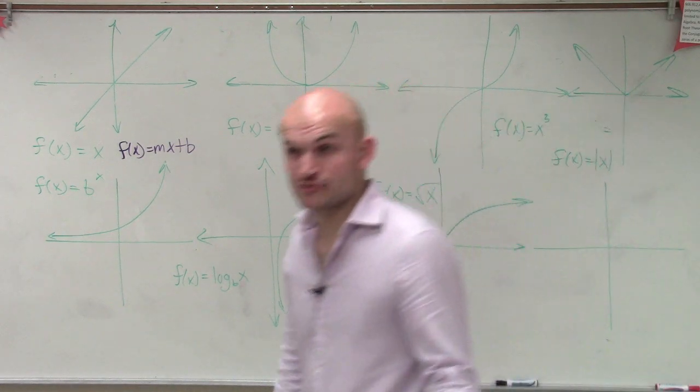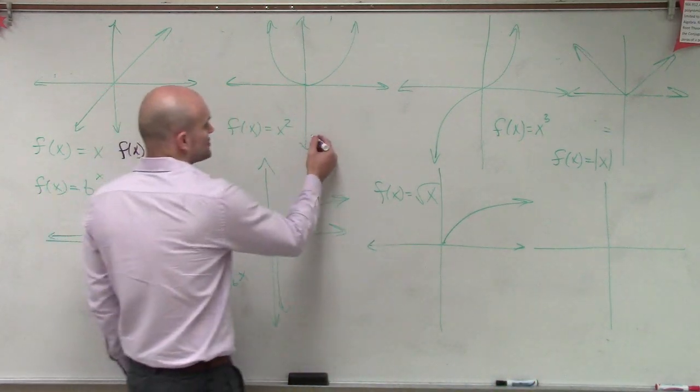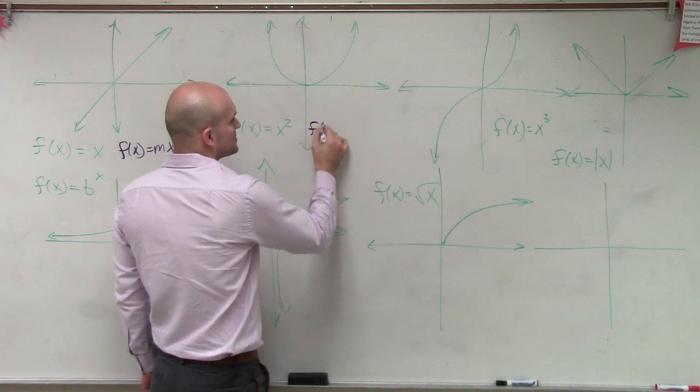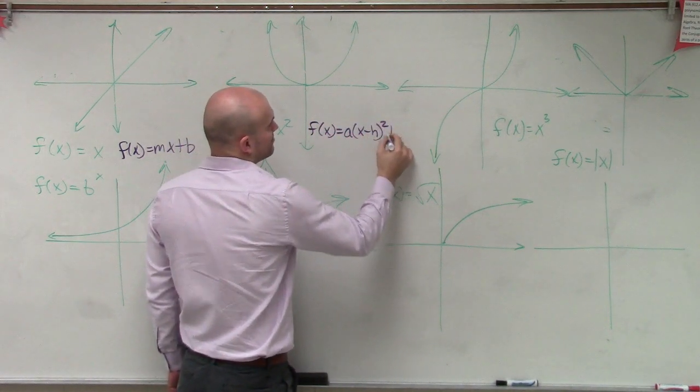However, for quadratics, if we were given something in the standard form, we introduced ourselves to a vertex form, which was like this: f of x equals a times x minus h squared plus k.